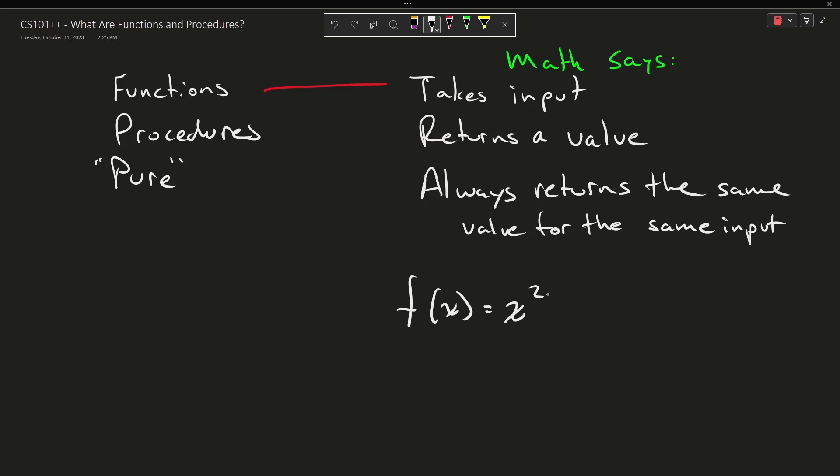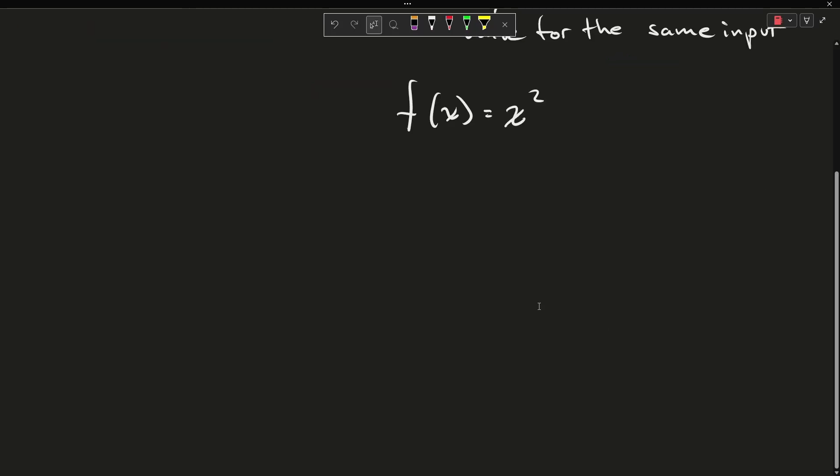In programming or in computer science we might see something like this. We could declare a function called square. It takes an input called x and it returns x times x. This is a function.